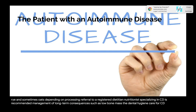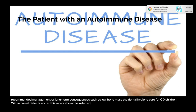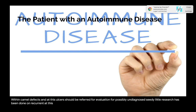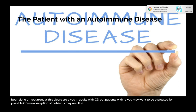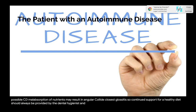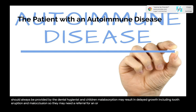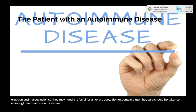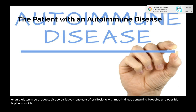Dental hygiene care for celiac disease: children with enamel defects and aphthous ulcers should be referred for evaluation for possibly undiagnosed CD. Patients with recurrent aphthous ulcers (RAU) may want to be evaluated for possible CD. Malabsorption of nutrients may result in angular cheilitis and glossitis, so continued support for a healthy diet should always be provided. In children, malabsorption may result in delayed tooth eruption and malocclusion requiring orthodontic referral. Dental products typically do not contain gluten, but ensure gluten-free products are used. Palliative treatment of oral lesions with mouth rinses containing lidocaine and possibly topical steroids. Assist the patient in tobacco cessation.